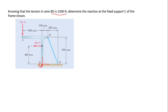Let's start. We need to resolve the tension in x and y components. To do that we need to find the angle, so we need to indicate the Cartesian plane. This angle φ is what we are looking for, and we can use the trigonometric ratios to solve for it.